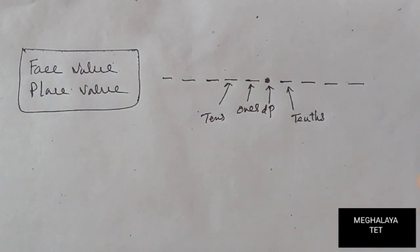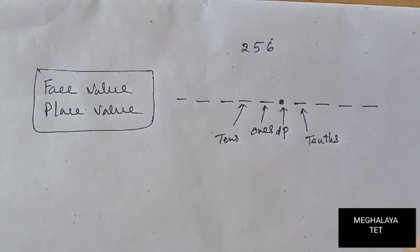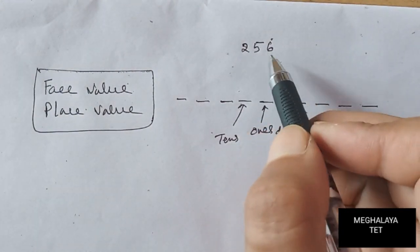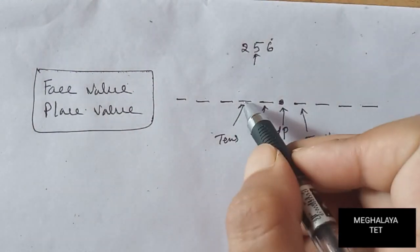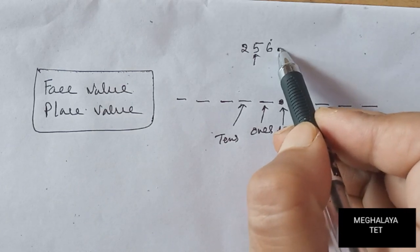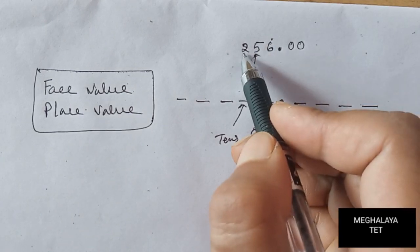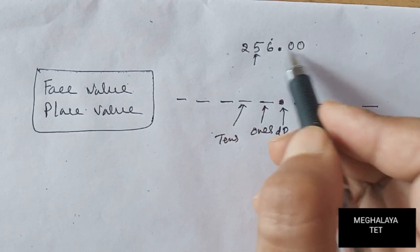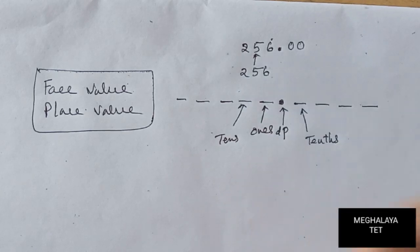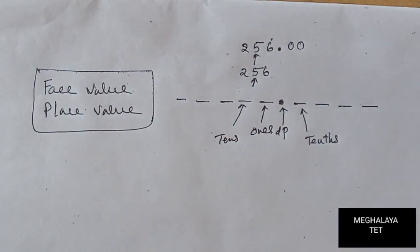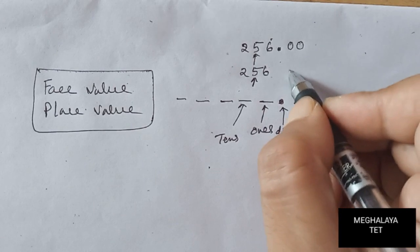To understand face value and place value, let's take an example. Suppose I give the number 256. What is the place value of 5? We can write 256 as 256.00, so the decimal point is here. The digit 5 is in the tens place.